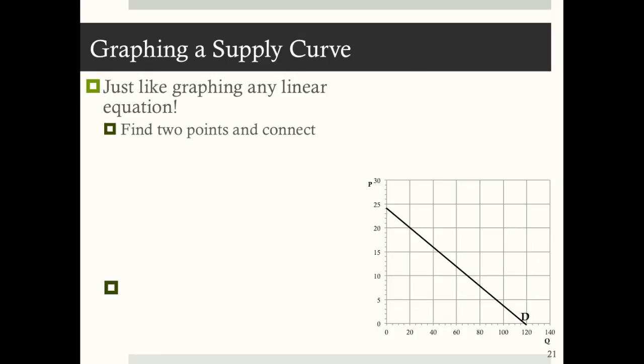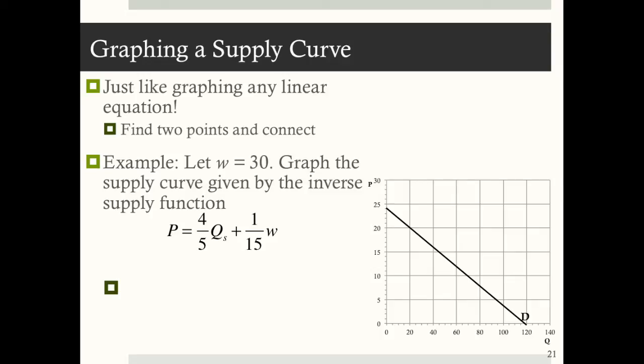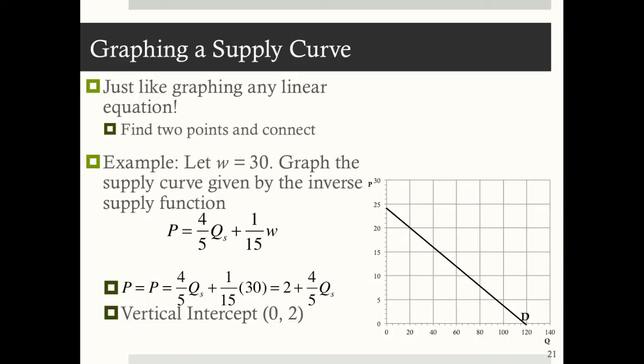Graphing a linear supply curve is just like graphing any linear equation — find two points and connect them. For example, let the wage rate W equal 30 and graph the supply curve given by P equals four-fifths Q sub S plus one-fifteenth W. Plugging in W equals 30 and simplifying gives P equals 2 plus four-fifths Q sub S. The vertical intercept is (0, 2) and the horizontal intercept is negative 2.5, which is off-graph, giving an upward-sloping supply curve.